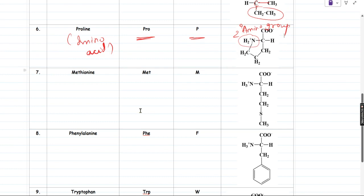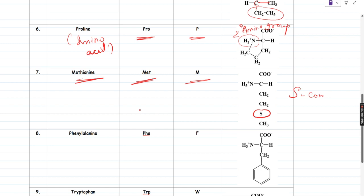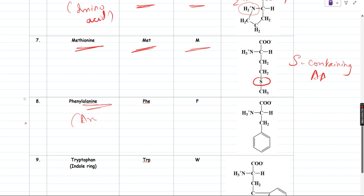Next is methionine — three-letter code MET, one-letter code M. If you see methionine, it has a sulfur in its side chain: CH2CH2SCH3. So it is a sulfur-containing amino acid. Next is phenylalanine — an aromatic amino acid because it has an aromatic side chain. The three-letter code is PHE and one-letter code is F, not P because P is already taken by proline. If you see the side chain, it is going to be CH2 with a benzene ring attached below.